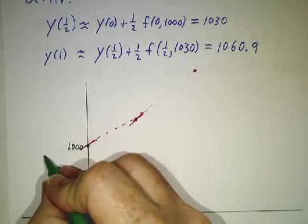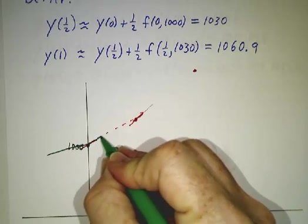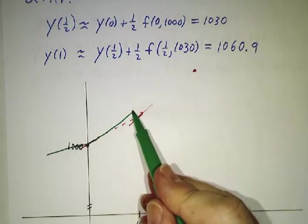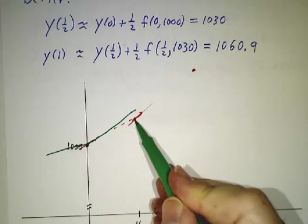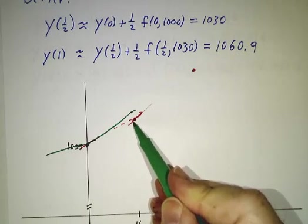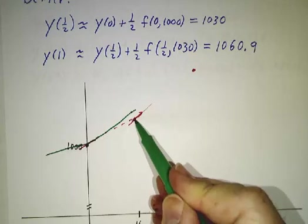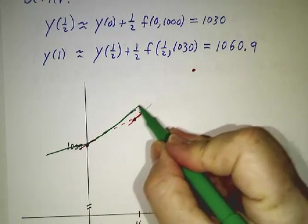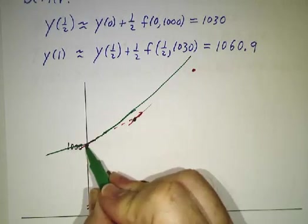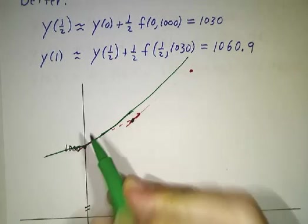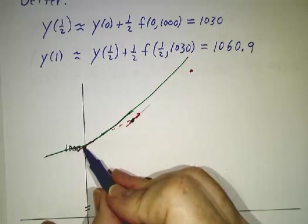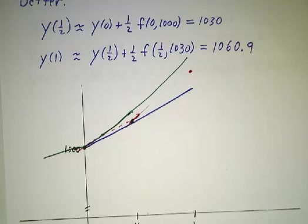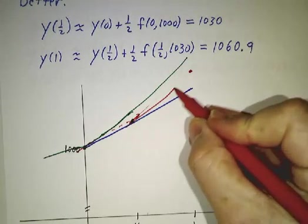Now the real curve curves away and so not only did we miss the curvature here, but at this point we were on the wrong track. We had the wrong value at 1/2. Because we had the wrong value, our formula gave us the wrong derivative and so we continue to have some more error up here. But even so, using the wrong derivative here is better than using the derivative here. Doing it in one step took us out here. Doing it in two steps took us there.